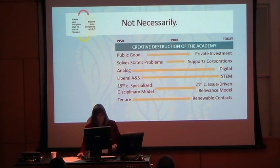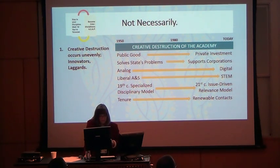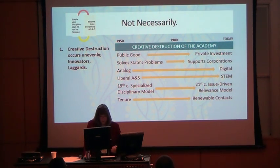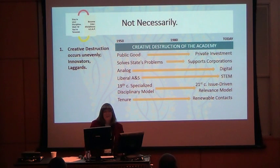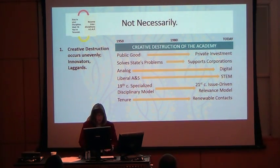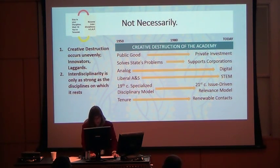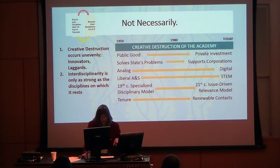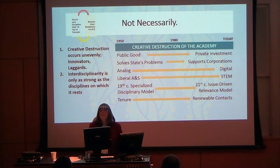My answer? Not necessarily. First, as someone who studies the geography of creative destruction, I've learned that this process occurs unevenly, moving, as the economist Joseph Schumpeter said, with gale force across the landscape. Some institutions will be innovators and get rid of the old quite quickly. Others will wait and see how things pan out and be laggards. Or they won't have access to the resources that it takes to move to a more interdisciplinary university model and will become anachronisms. Second, the directors of most institutes, centers, and interdisciplinary degree programs will tell you that the quality of interdisciplinary work rests to a large degree on the strength of the discipline-based departments from which their units draw.